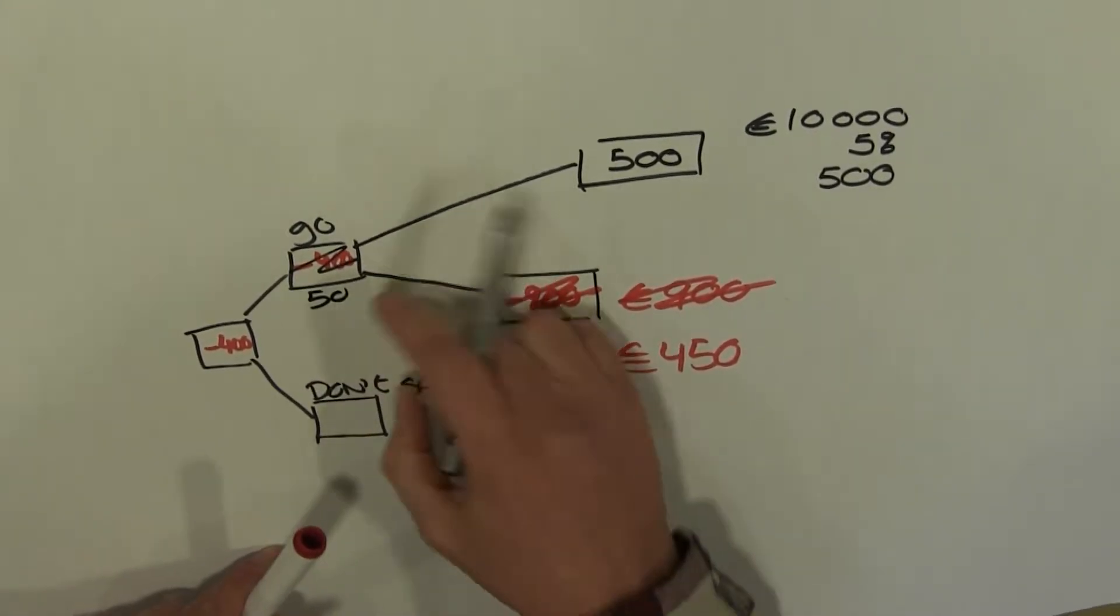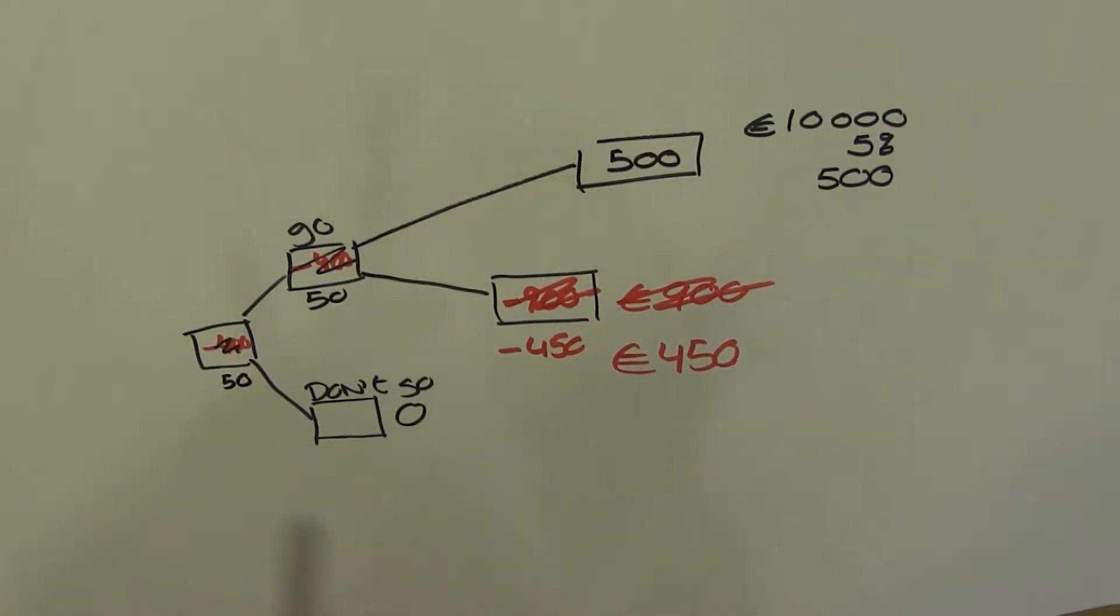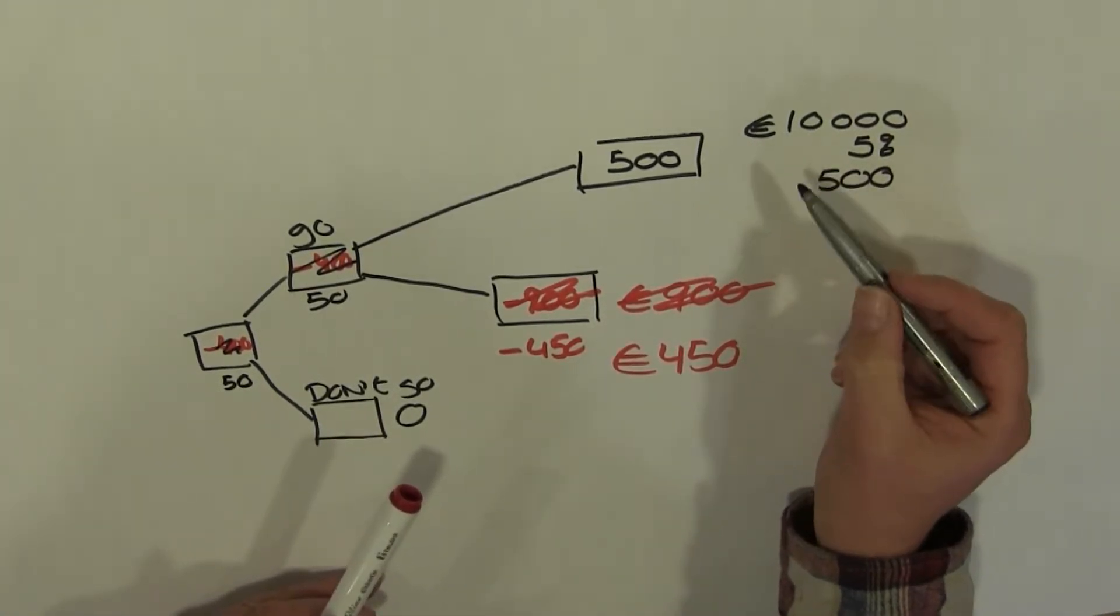So, it's minus 450. I'm going to be adding those two. It's going to come up with a number of 50. Add those two together, and I have a number 50. So, it's telling me, yes, I should go to the art market together with a colleague of mine.